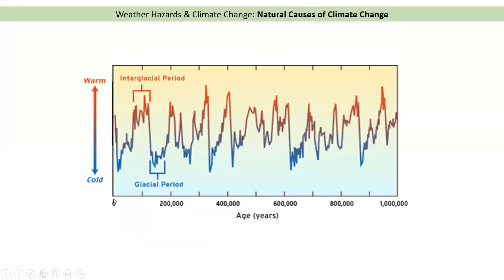Now if we go back further, this next graph goes from today all the way to a million years ago. We can see that even then the temperature varied between interglacials — warm periods — and glacials, which are cold periods. So even a million years ago, before humans were around, the temperature was varying quite a lot, going between hot and cold periods. So what we need to understand are the natural causes that have changed the climate in the past.